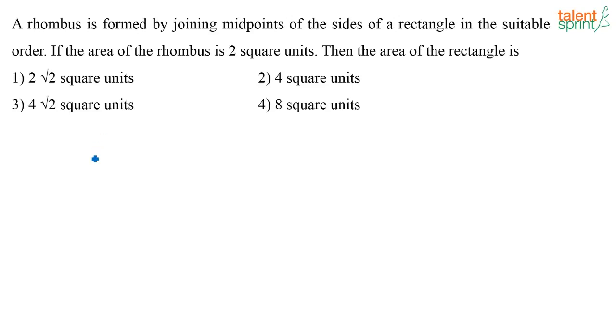So you have a rectangle and when you join the midpoints of the rectangle, you are getting a rhombus. Now if you look at these two diagonals, see basically this length of the diagonal of this rhombus is equal to the length of the rectangle. The length of this diagonal of the rhombus is equal to the breadth of the rectangle. The way the rhombus is drawn.